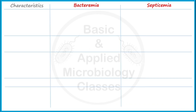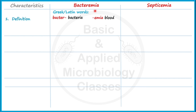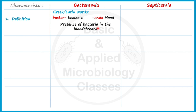The first point of difference is the definition. The term Bacteremia has been originated from Greek and Latin words, where 'bacter' means bacteria and 'emia' means blood. So Bacteremia represents a condition for the presence of bacteria in the bloodstream.